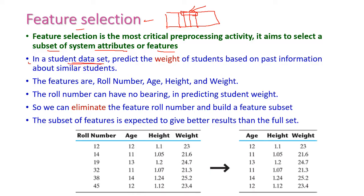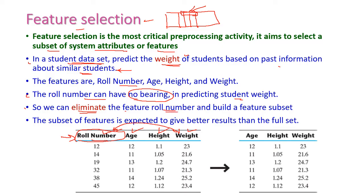That is the student dataset. In the student dataset, we need to predict the weight of the student based on the past information of similar students. The given features are roll number, age, height, and weight. The roll number has no bearing on prediction of student weight — it is used simply for identifying the student, but there is no relationship between the weight and the roll number. So we can eliminate the feature roll number and build a new feature subset. The new table has age, height, and weight — no need for roll number.